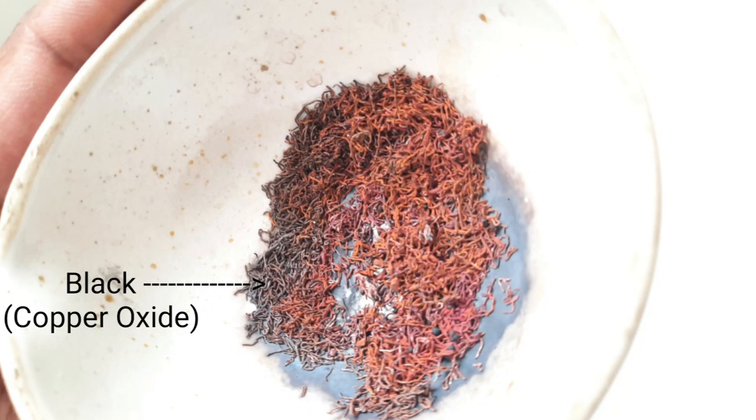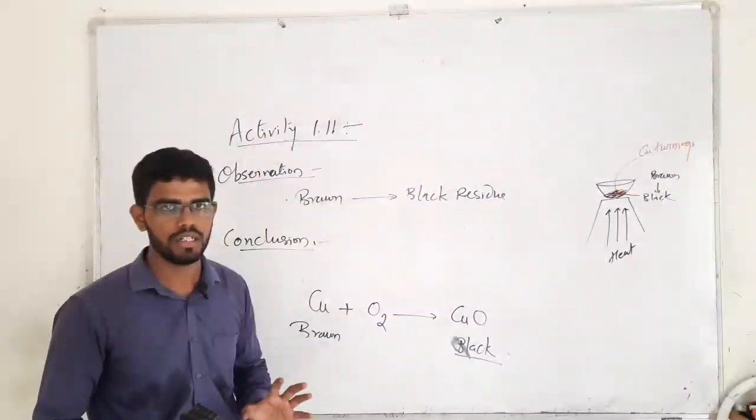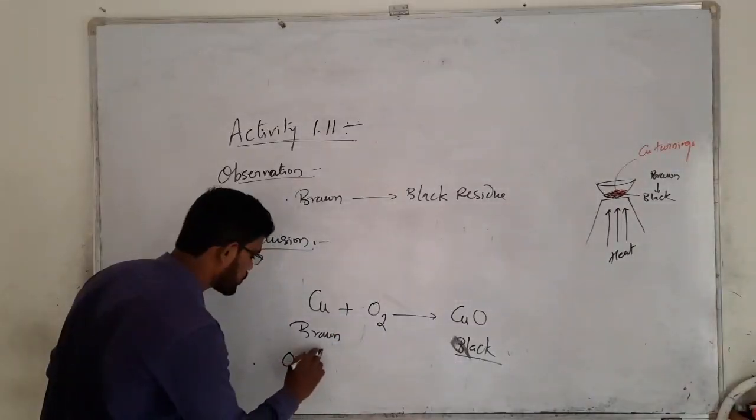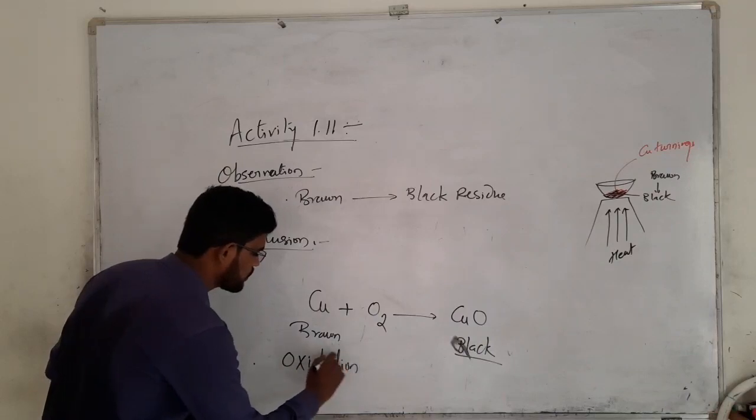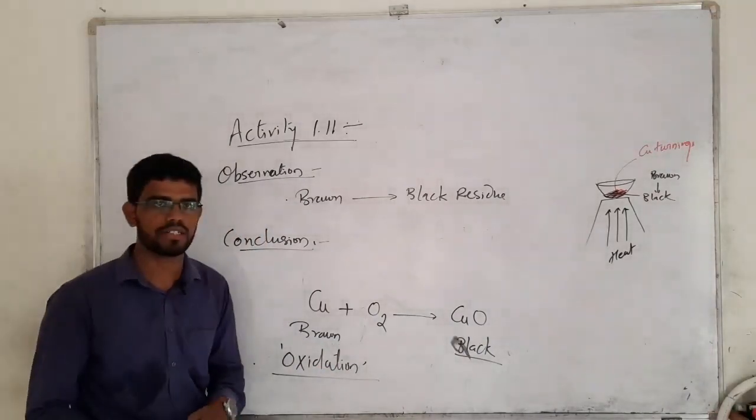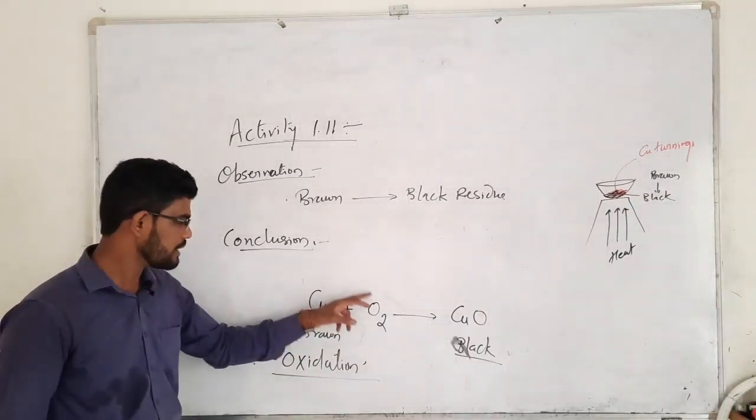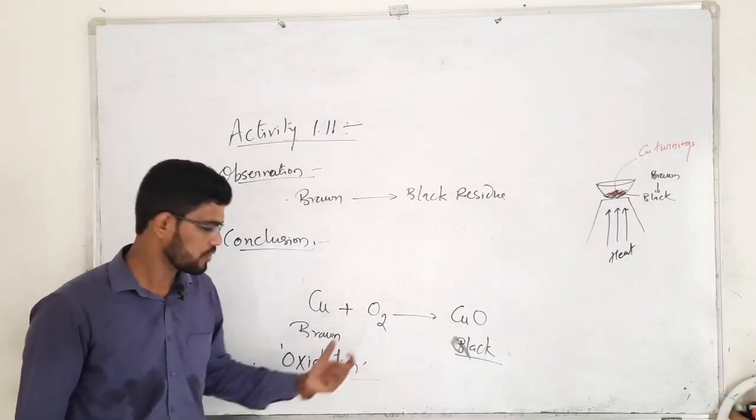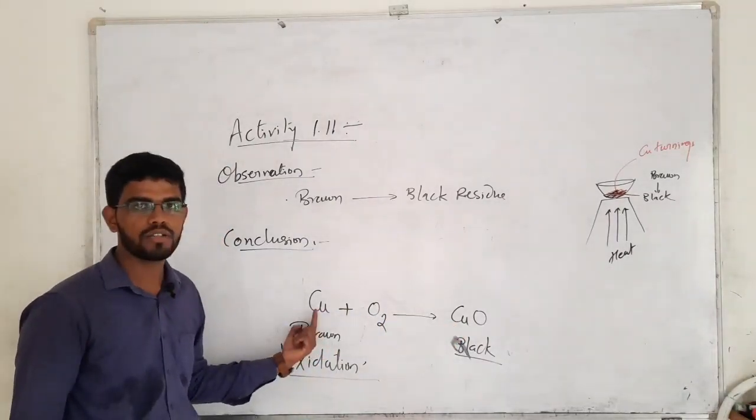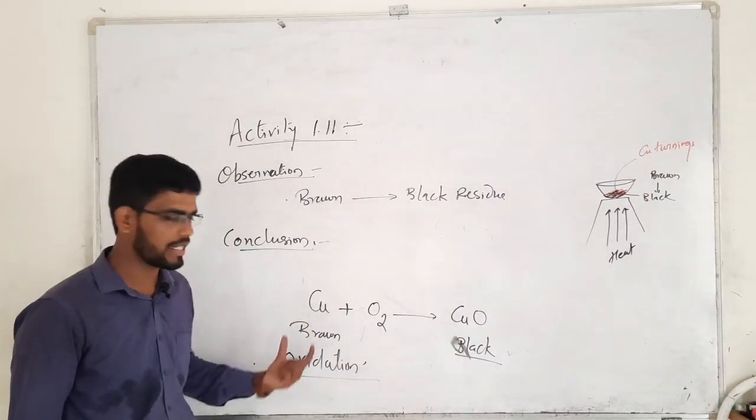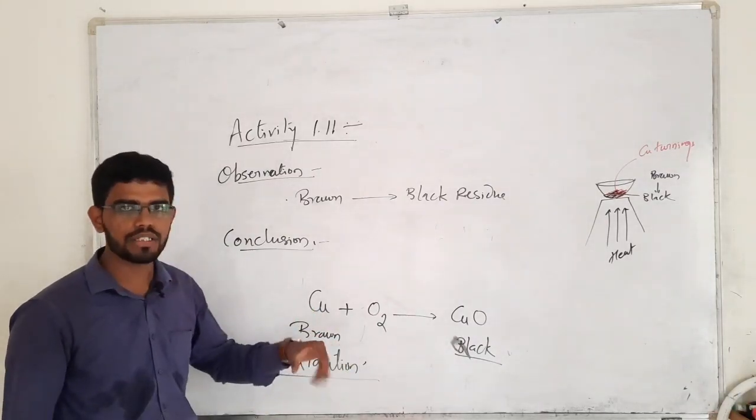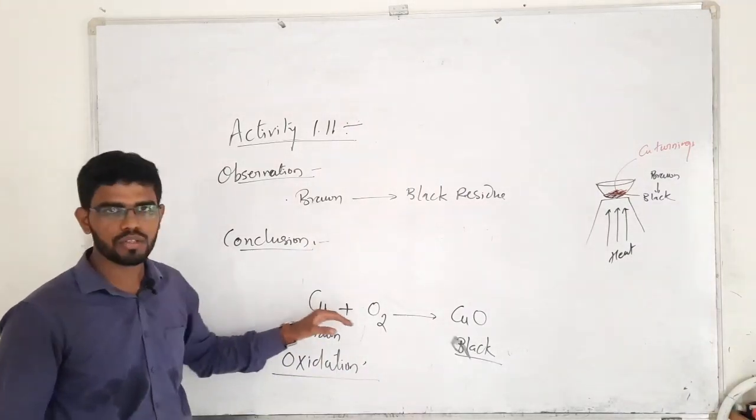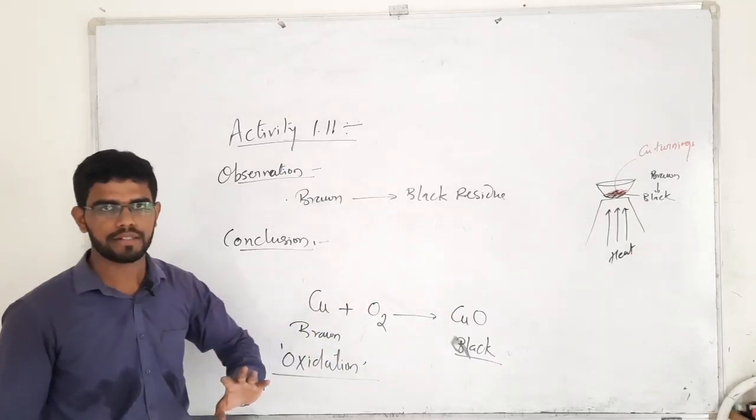So this reaction, this is a specific category of reaction we call oxidation reaction. That is the reaction where oxygen is being added in any of the species or any compound to give you the product. So what we have seen now is oxidation, and the fact that we have observed is copper undergoes oxidation to give you copper oxide.